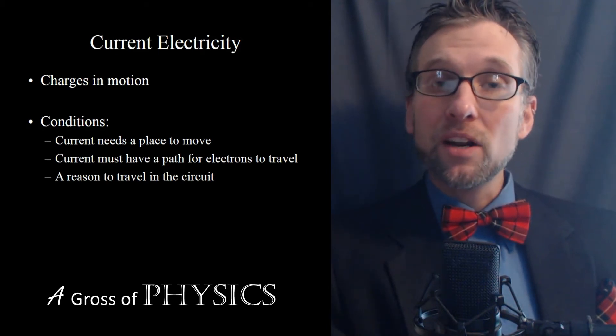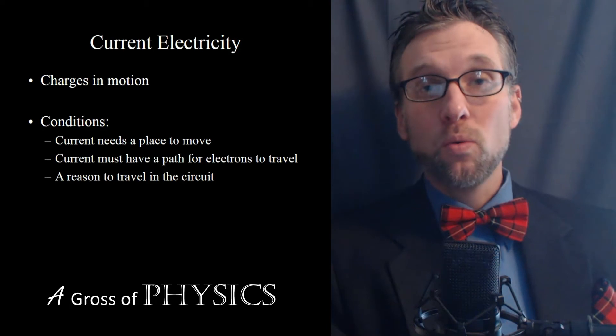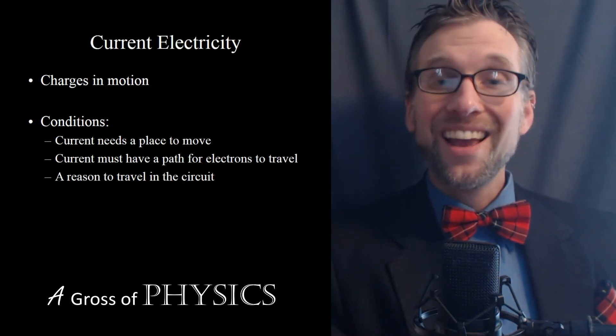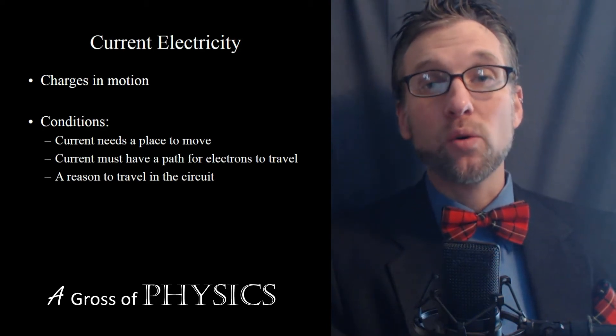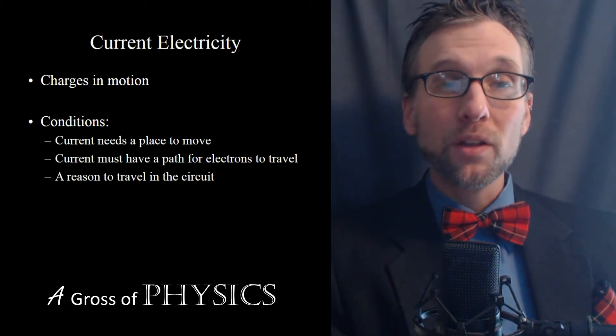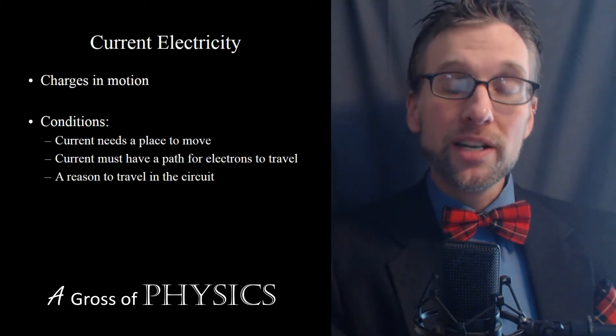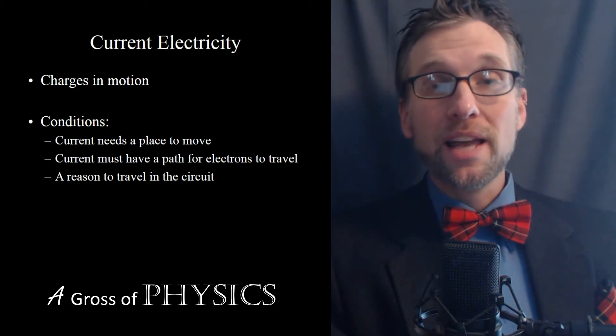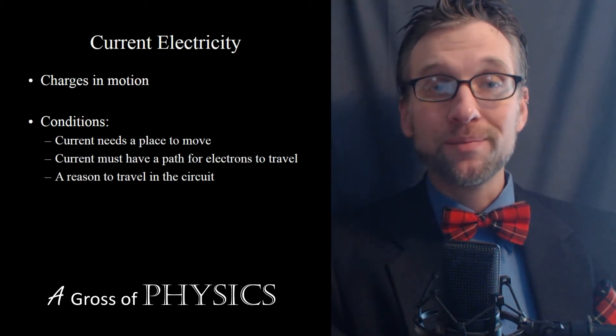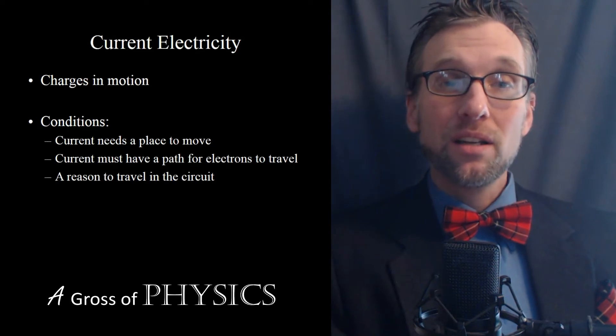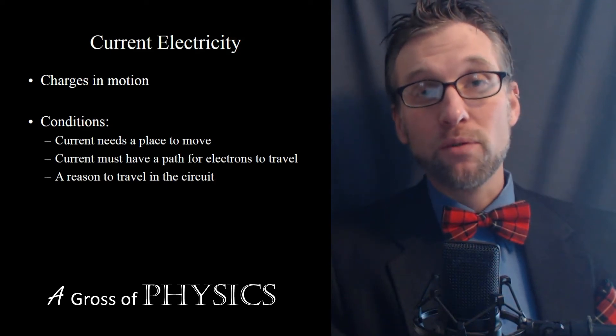But to begin our discussion, we need to discuss why current can exist in the first place, and there are conditions that must be met in order for this to occur. There are three conditions that need to be met. The current needs a place to move, it needs to have a path for the electrons to travel, and it needs a reason for the electrons to travel within the circuit.